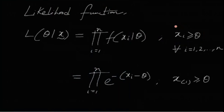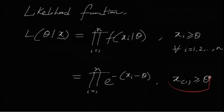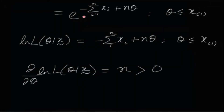If each of x₁, x₂, …, xₙ is greater than or equal to θ, then obviously the minimum of them is also greater than or equal to θ. So the condition is equivalent to saying x_(1) ≥ θ, where x_(1) is the first order statistic. Therefore the likelihood function equals e^(−(Σxᵢ − nθ)) for θ ≤ x_(1), and zero otherwise.